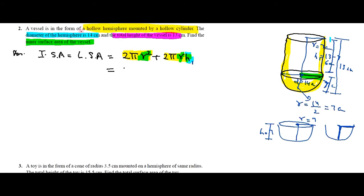So the cylinder's height is 13 minus 7, which equals 6. Now look at the formula - in both there's 2πr in common, with r plus h remaining.